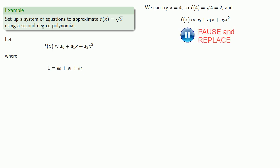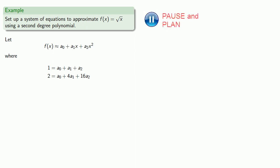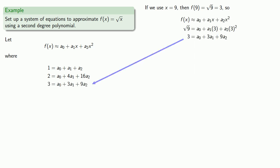Which gives us a second equation. So that's two equations. We need a third equation. And again, we want to pick a value of x for which we have an exact function value. So how about x = 9? Since f(9) is square root of 9 is equal to 3, I can substitute x = 9 into our equation. That gives us the third equation of the three that we need to solve for a₀, a₁, and a₂.